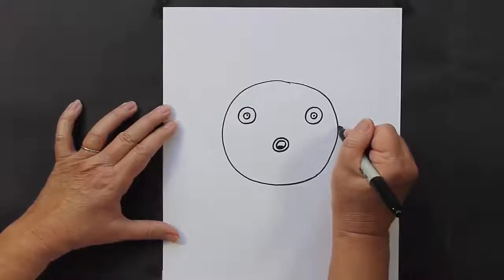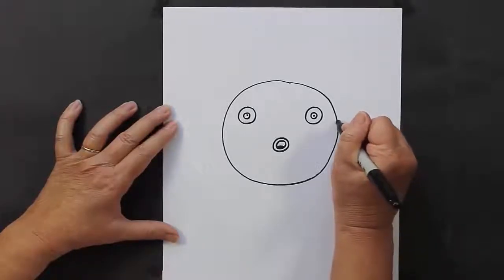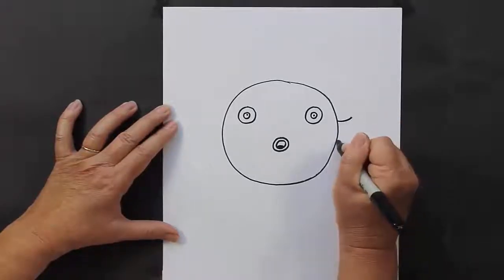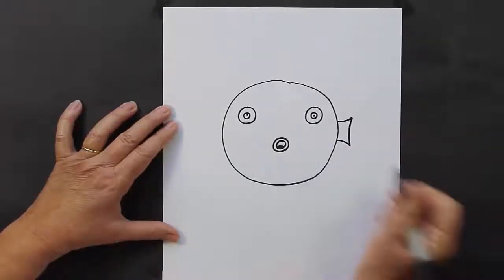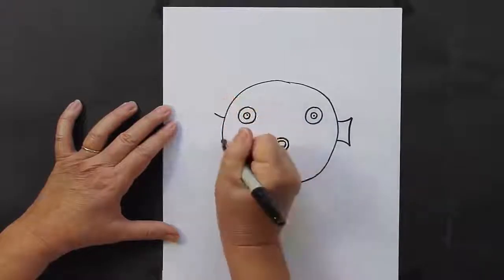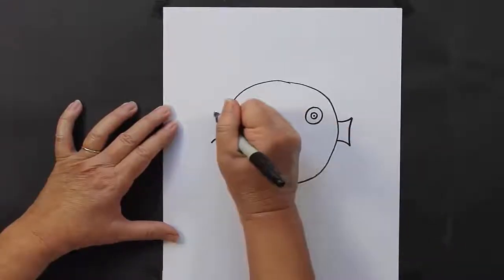Now we are going to make some fins on the side of his body. So curve line up, curve line down, and curve line attaching. Curve line up, curve line down, and attach.